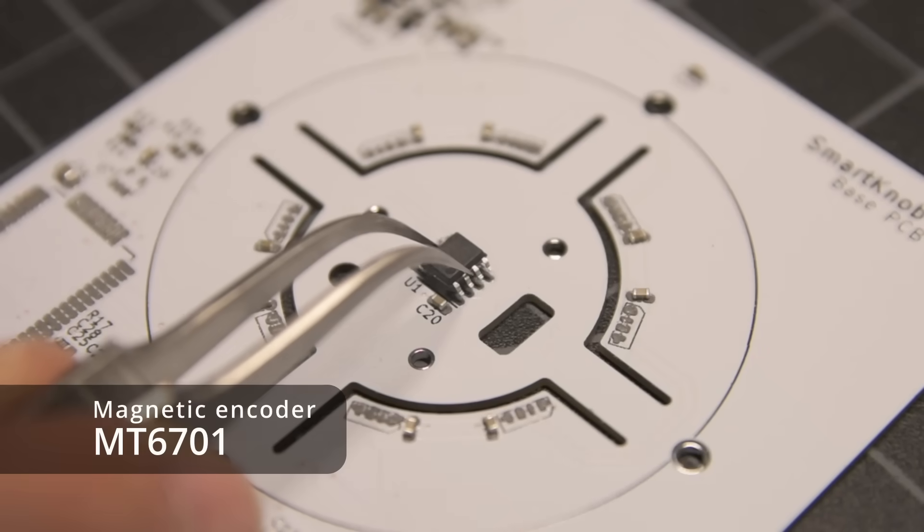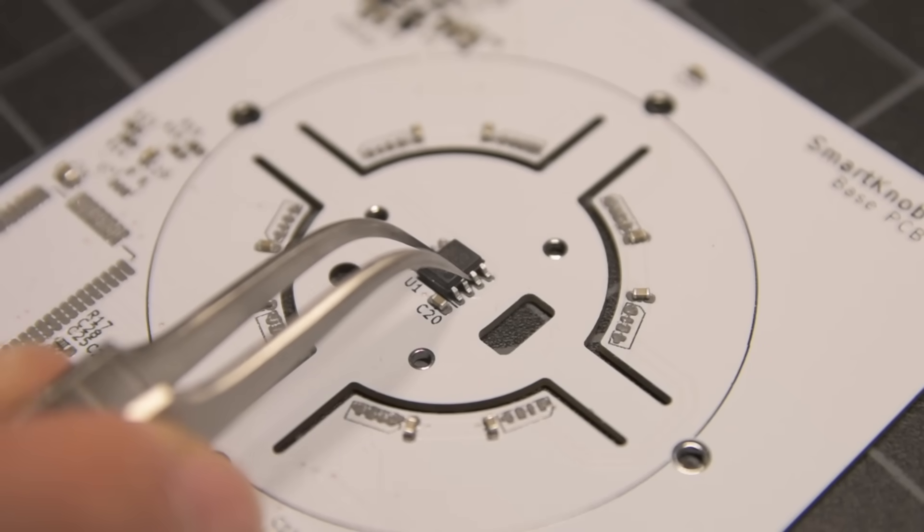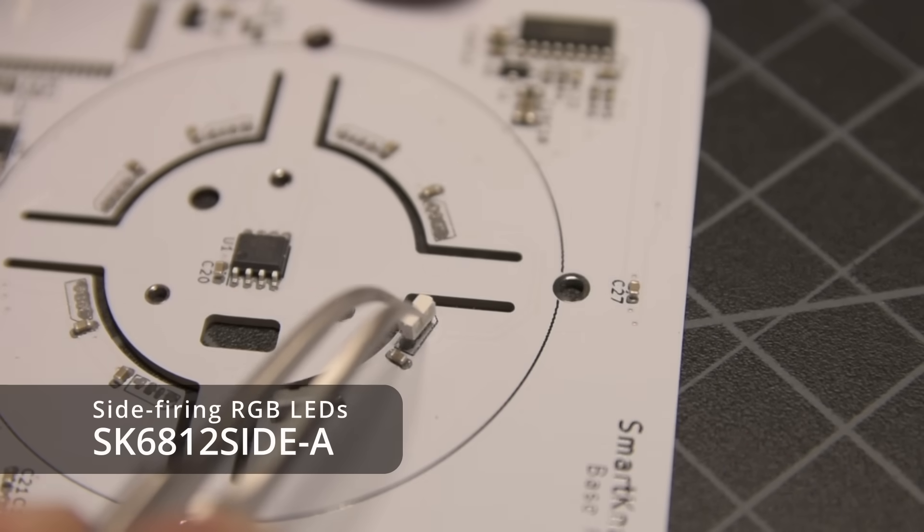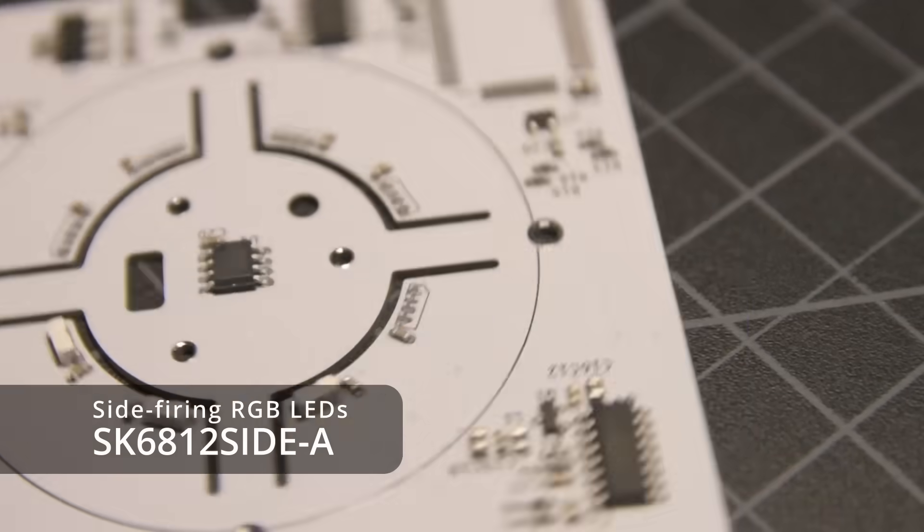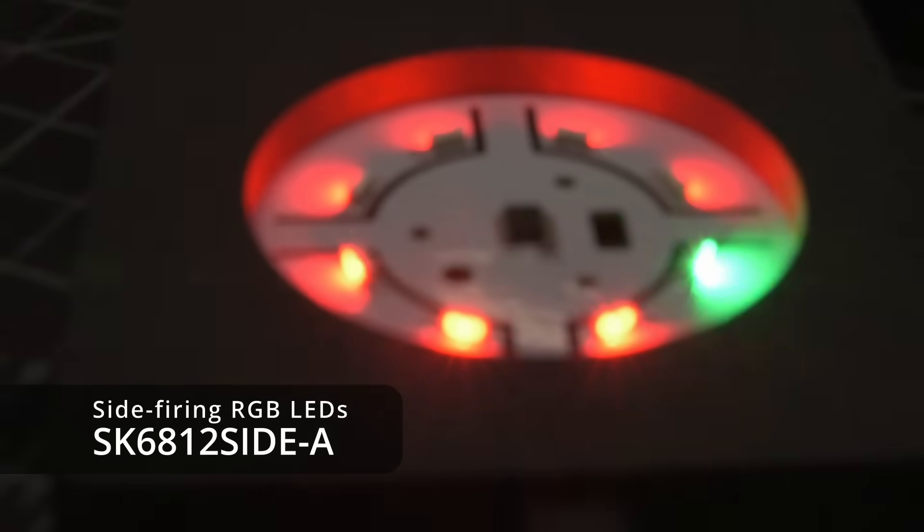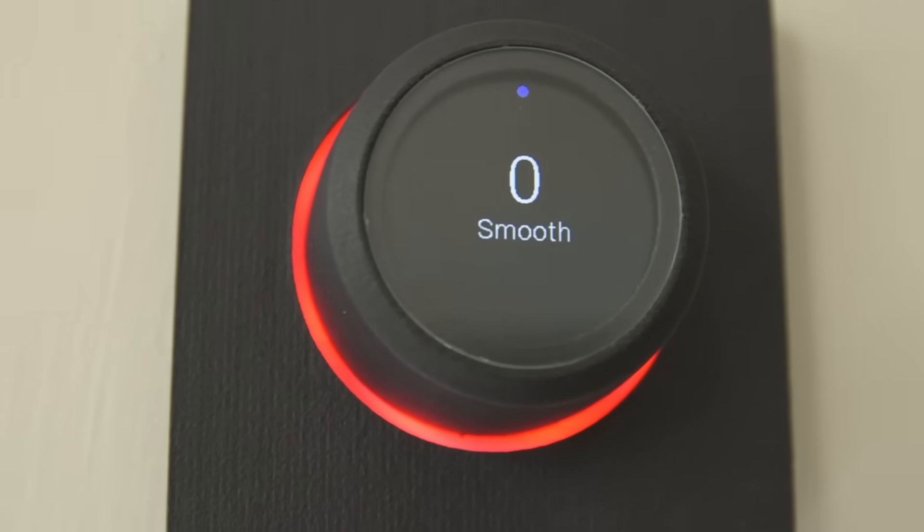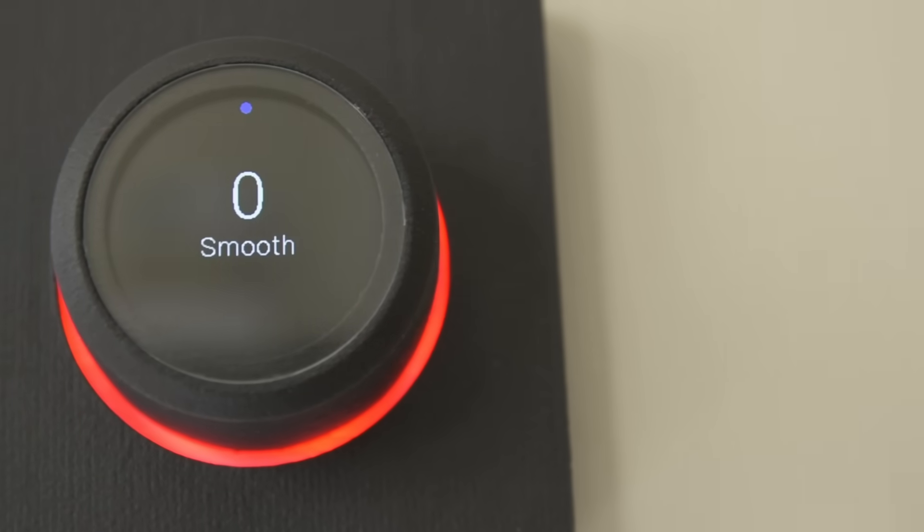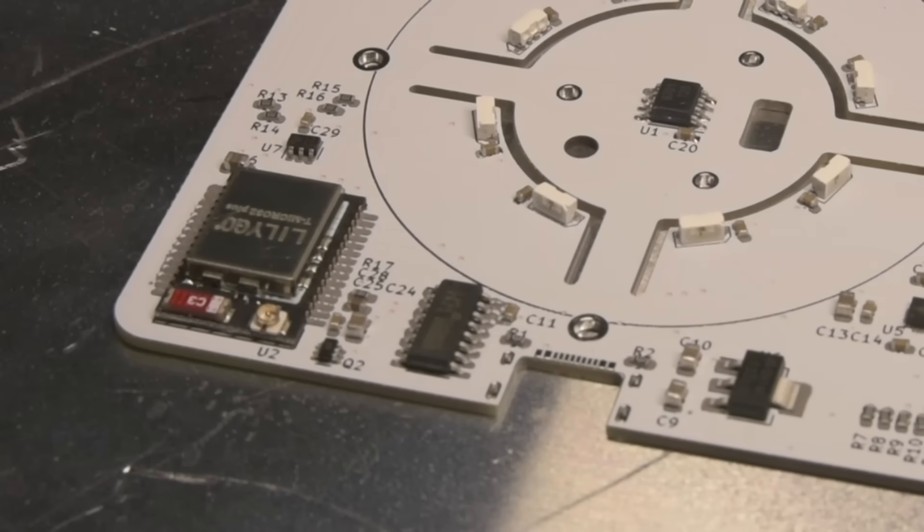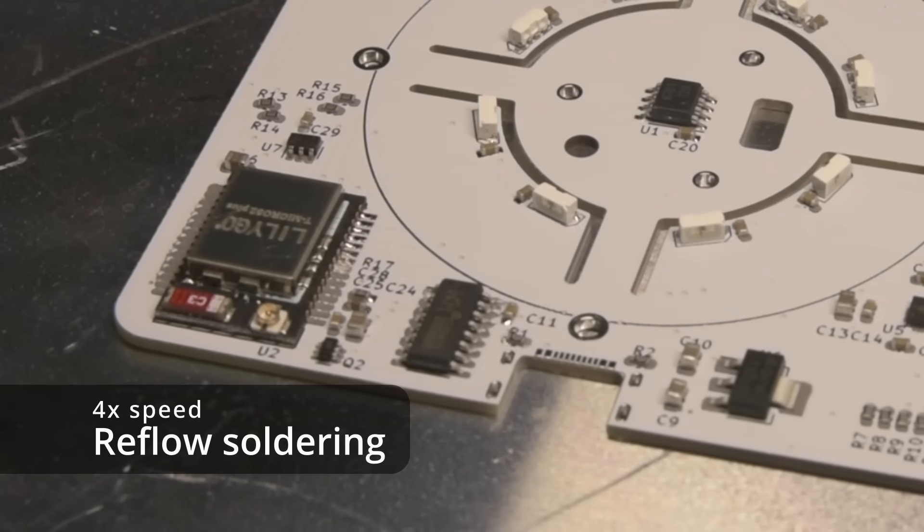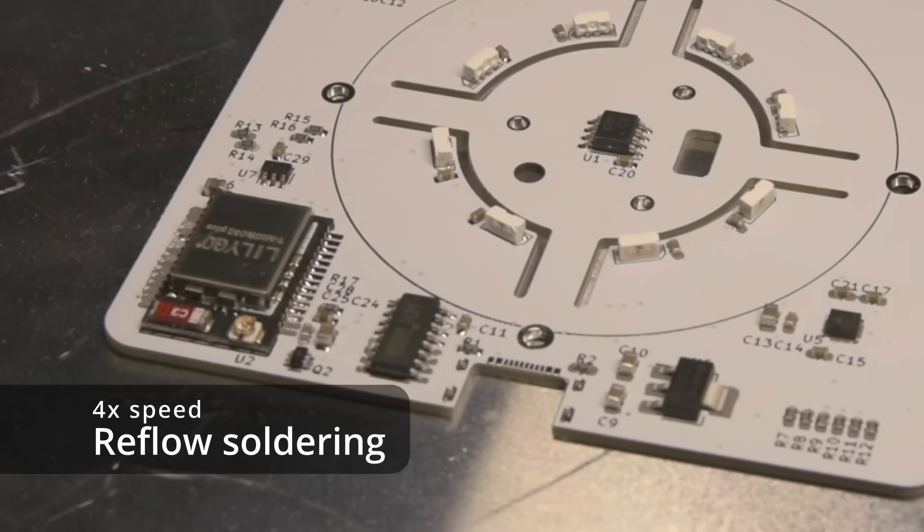Finally we've got the magnetic encoder that goes smack dab in the middle, and gets surrounded by a ring of eight side-firing addressable RGB LEDs. By using side-firing LEDs and a white PCB, I was able to get a fairly diffuse and relatively even glow, without needing some kind of physical diffuser piece. Then the whole PCB gets plopped onto a hot plate and heated to over 200 degrees Celsius until the solder melts.